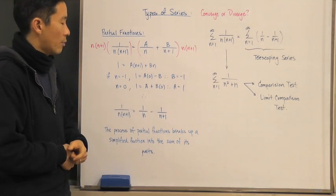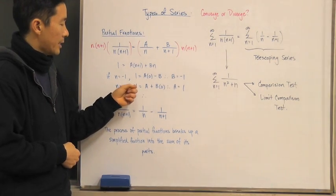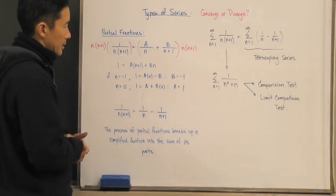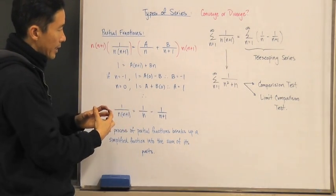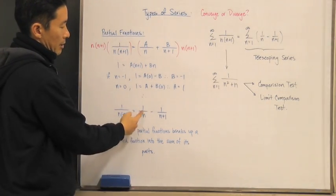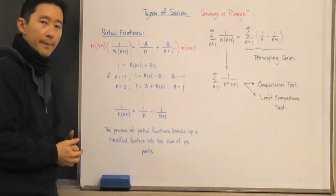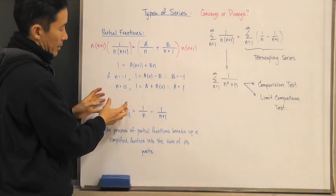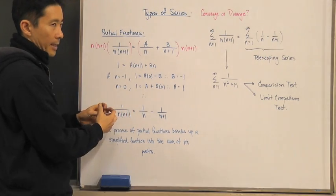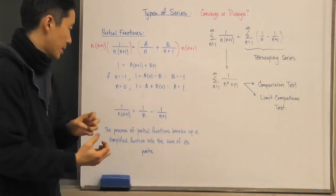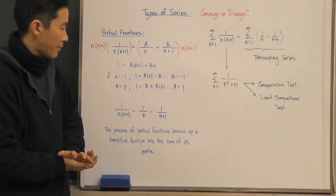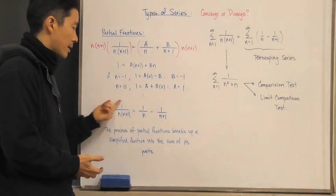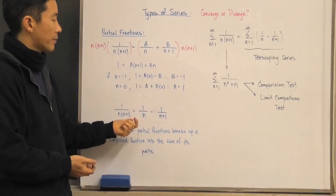If we let n equal zero, then one equals A plus B times zero, so A equals one. Therefore, this fraction can be broken up into one over n minus one over n plus one. That is what the process of partial fractions does — it takes a simplified fraction and breaks it up into its constituent parts.